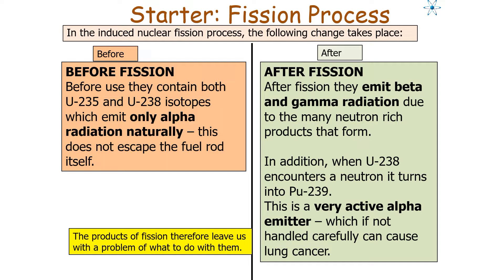After fission, the nuclear fragments produced will emit beta or gamma radiation, because the products tend to be very neutron-rich and therefore very radioactive. Additionally, uranium-238 can encounter a neutron and turn into plutonium-239, which is a very active alpha-emitter that can cause lung cancer if not handled carefully. So it is the products of fission, not the reactants, that present the problem.